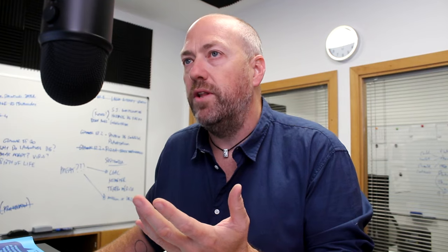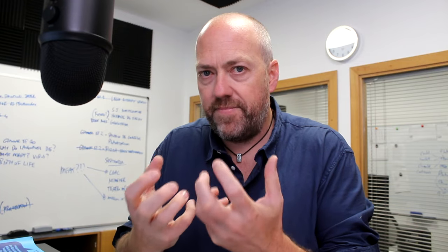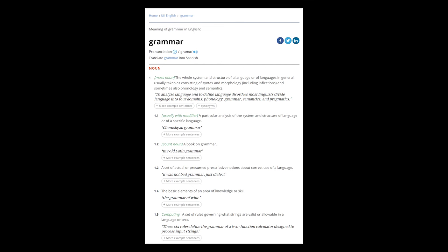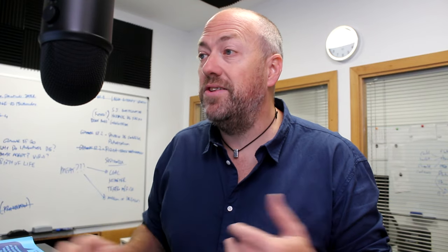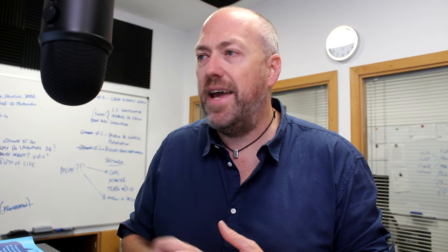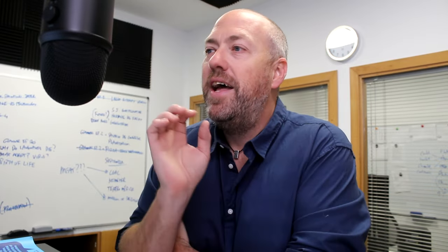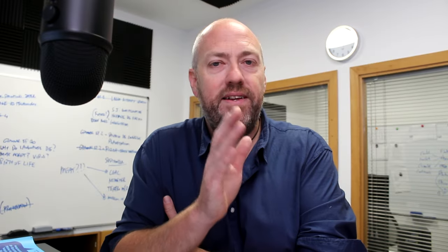If we look in some dictionaries, like the Oxford Dictionary, the definitions are quite dense — the whole system and structure of a language, syntax, morphology, including inflections. Merriam-Webster talks about the study of the classes of words and their inflections. But I think that the Cambridge Dictionary nailed it. The definition is: the way you combine words and change their form and position in the sentence, or the rules of this. That's grammar.